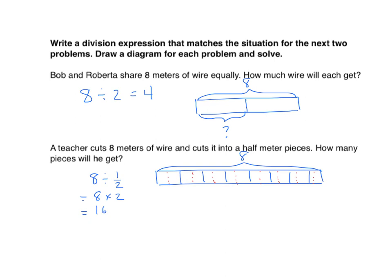On the test, they're going to ask you which one of these could be solved by one-half times eight. Clearly, one-half times eight is the same as eight divided by two — that gives us eight halves equals four. So the first problem matches, but the second problem has a solution of sixteen. Multiplying by one-half is not the same as dividing by one-half.